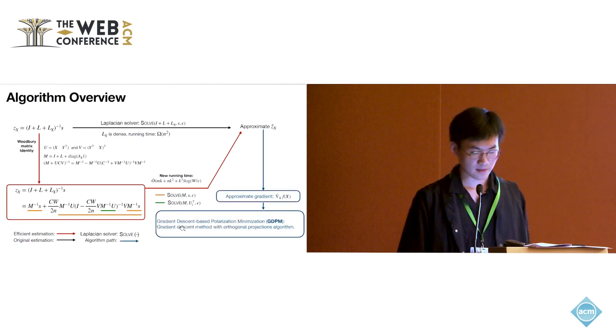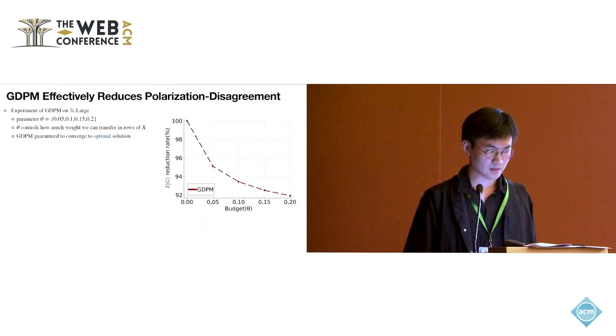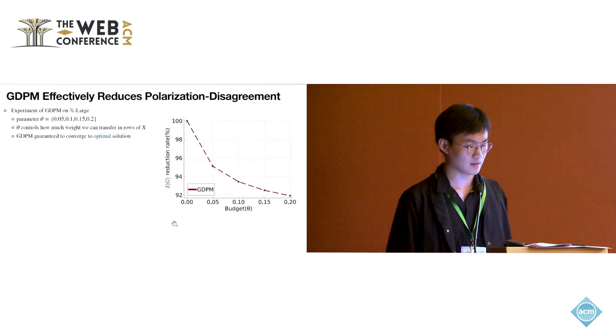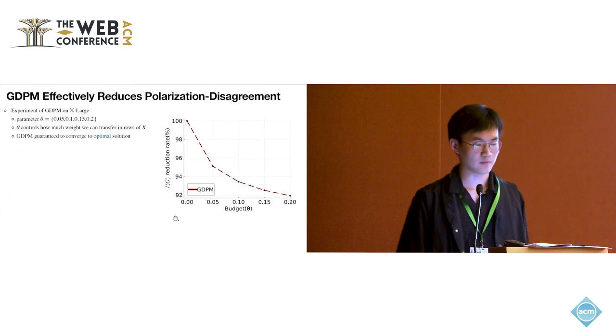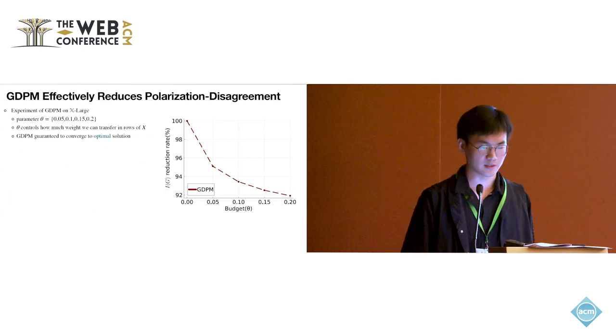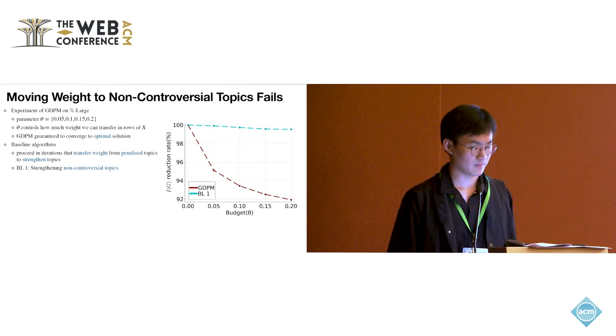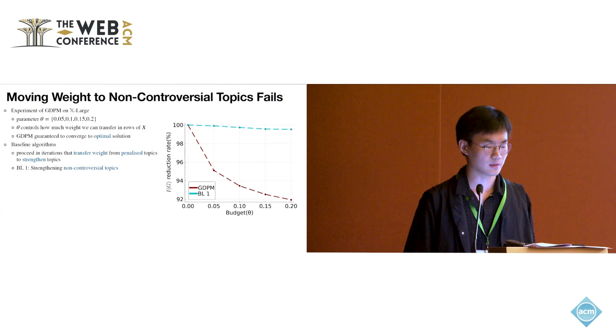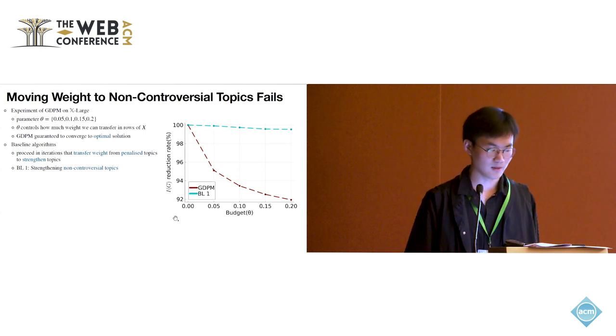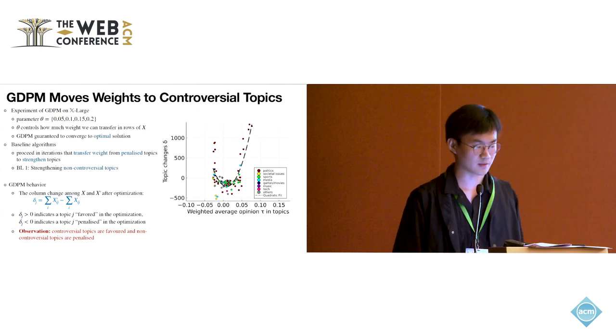Then we design a gradient descent algorithm to solve this problem. As an experimental result, we tested with different parameters, and we see that our method could effectively reduce polarization in this experiment. We also think about a simple baseline, like transfer weights from penalized topics to strengthened topics. The first policy we adopt is to strengthen non-controversial topics, but it doesn't work well.